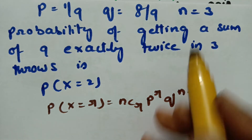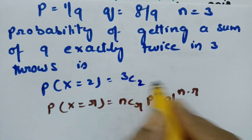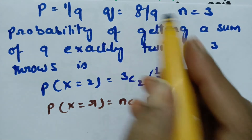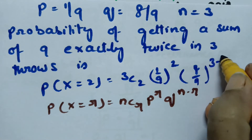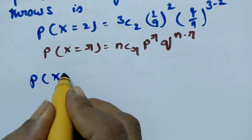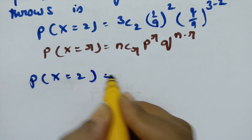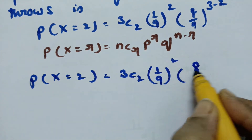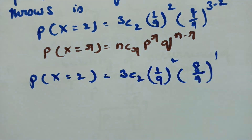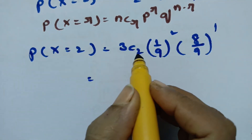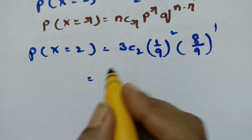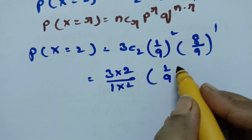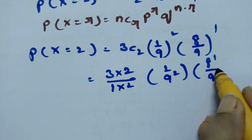What is the value of N here? N is equal to 3. Substituting: 3C2, P is equal to 1/9 power R where R is equal to 2, and Q is equal to 8/9 power (N−2). So the probability of getting a sum of 9 exactly twice in 3 throws is: 3C2 × (1/9)² × (8/9)^(3−2) = 3C2 × (1/9)² × (8/9)^1. Here nCr = n! / [(n−r)! × r!], which gives 3C2 = 3.